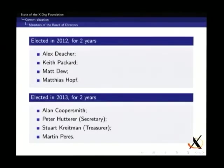Okay, so the board of directors is composed of eight members. Every year we re-elect four new people. So in 2012 we had elected Alex Deucher, Keith Packard, Matt Dew and Matthias Hopf. So Alex Deucher is working for AMD. Keith is working for Intel. Matt is not working on something that is X.Org related. Matthias is a professor in Germany. And this year, I mean last year, so Alan Coopersmith is working for Oracle. He's been elected. Peter, working for Red Hat, is now the secretary of the board. Stuart is the treasurer and I think he works for Oracle too. And I'm Martin Perez. I'm a PhD student in Bordeaux.